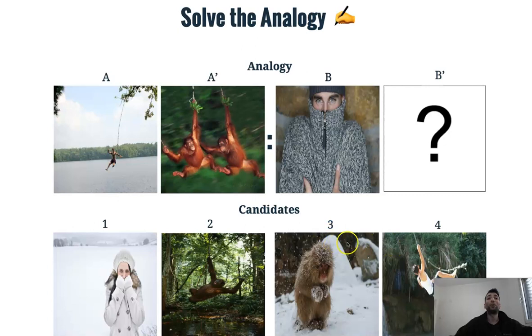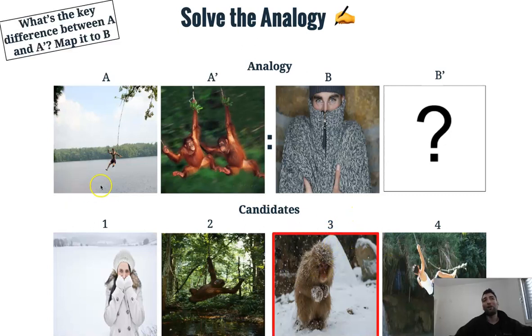And the answer is three. We have a man swinging on a tree changed to monkey swinging on a tree. So if we are given with a man shivering in the cold, the solution should be some kind of monkey shivering in the cold. And three is the only candidate in this case.